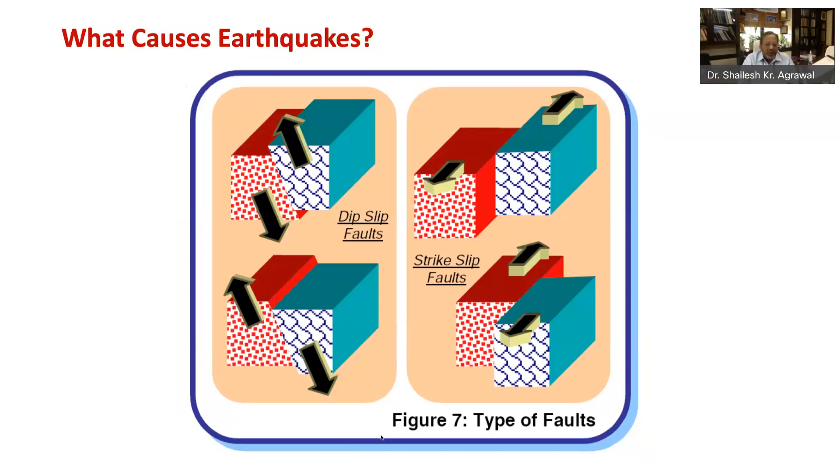A number of earthquakes also occur within the tectonic plate itself away from plate boundaries. These are called intraplate earthquakes. For example, the 1993 Latur India earthquake was an intraplate earthquake.